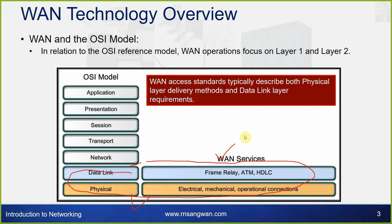The data link layer specifies Frame Relay, ATM, and HDLC. The physical layer covers electrical, mechanical, and operational connections.